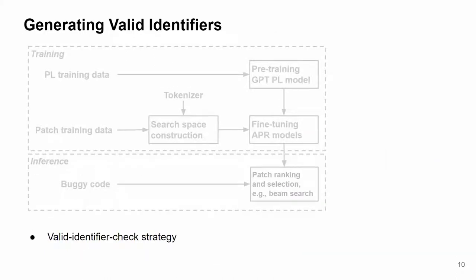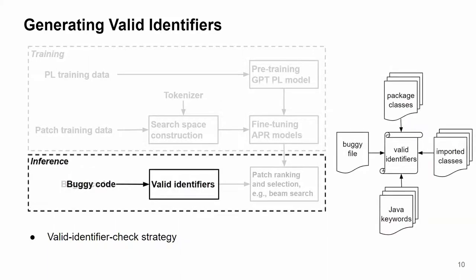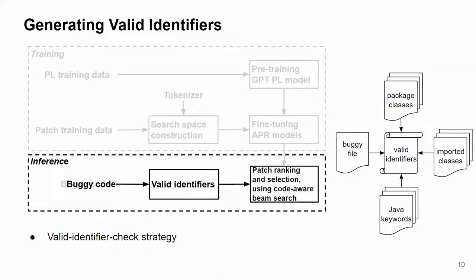After training the APR models, in order to let the beam search select and generate valid identifiers, we design a code-aware beam search that uses a valid identifier check strategy. That is, for a given buggy code, CURE will use a static analysis tool to extract all the valid identifiers for this bug from the buggy file, package classes, imported classes, and Java keywords. And then, the valid identifier check strategy will force the beam search to only select and generate valid identifiers.